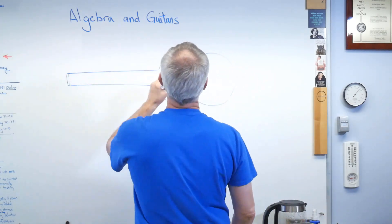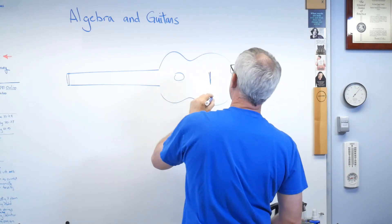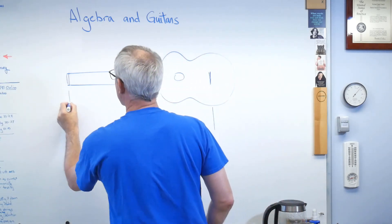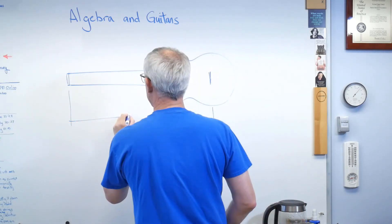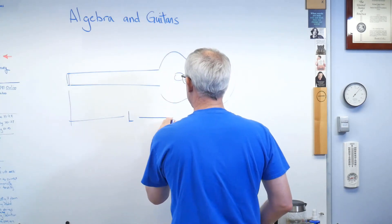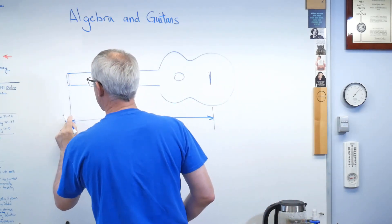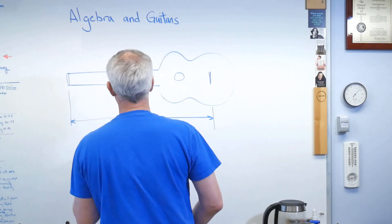and that's called the saddle back here. Those are just the names of it. So, there's the nut, and here's the saddle back here. Well, this distance right here, we'll just call that L since it needs a name. There.